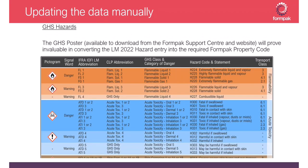A handy tool to help convert the labeling manual entry into the codes used in FormPack is the GHS poster, available to download from the FormPack Support Centre. For example, the conversion for Acute Toxicity Oral 4 is shown as AT04. It's a handy tool for converting labeling manual data into the properties required to be added in FormPack.